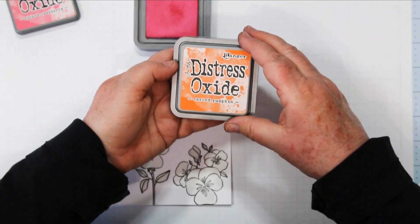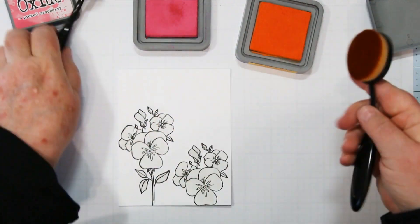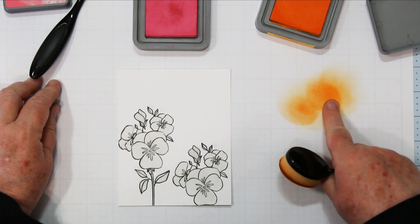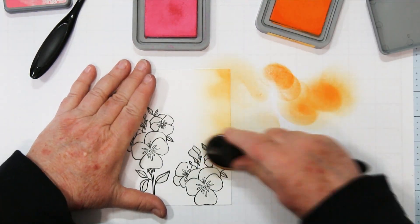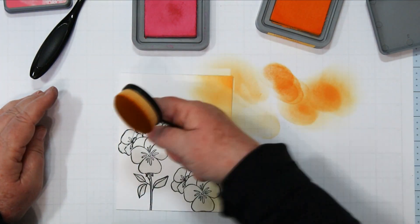Get your stamped image completely covered and then we're going to use some life-changing blending brushes from Picket Fence Studios and we're going to add our colors. And the colors I've chosen today are Picked Raspberry and Carved Pumpkin. I thought that they were a nice blend and perfect for a nice hot sunny day.